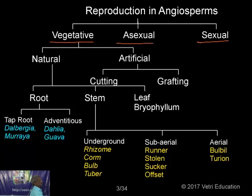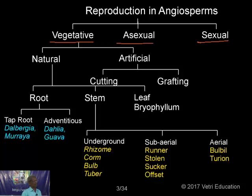In the natural method, roots, stems, and leaves — all the organs of the plant — are utilized for propagation. The artificial method includes mainly cutting and grafting; layering is another one, but it can be done only in very few plants. Cutting and grafting are predominantly practiced in many plants.